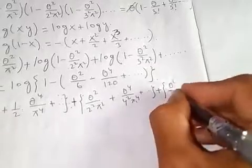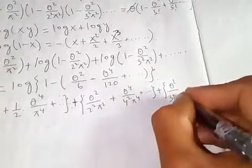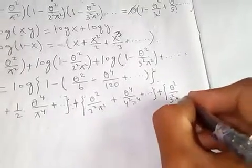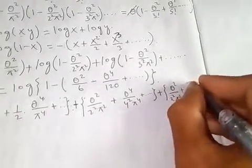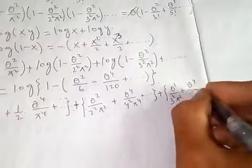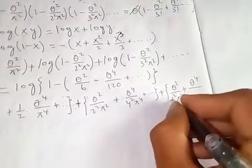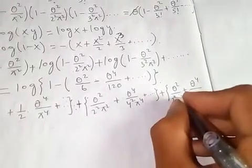And for the third term we get θ squared over 3 squared π squared plus θ to the 4 over 3 squared squared π to the 4.